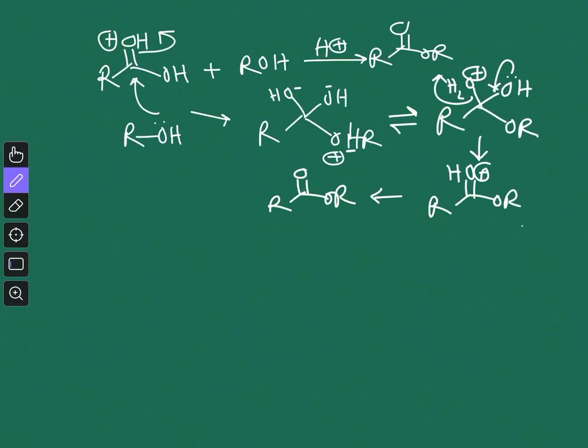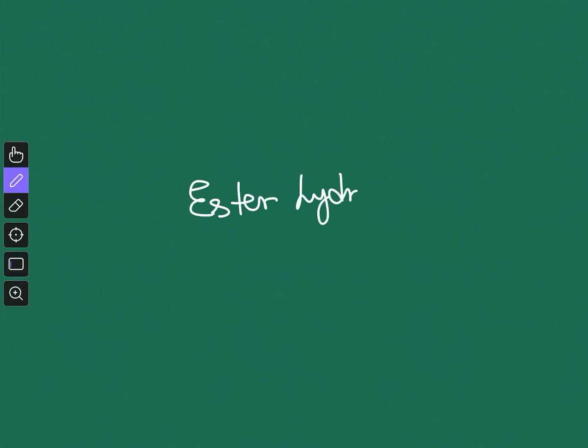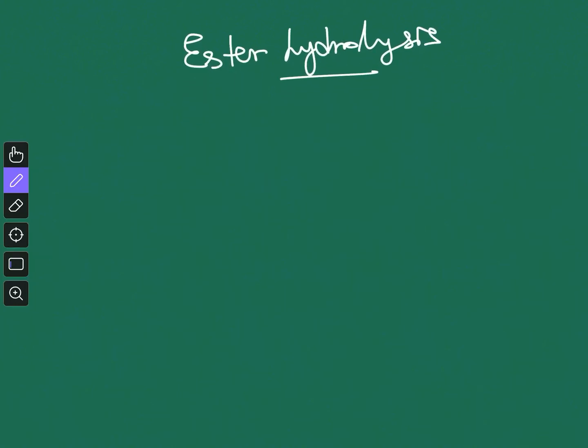In this video we will talk about ester hydrolysis. Ester hydrolysis occurs in both acid-catalyzed and base-catalyzed forms. Both categories consist of four different mechanisms each, making a total of eight different pathways by which an ester can be hydrolyzed. We will examine all these pathways one by one along with their nomenclature.